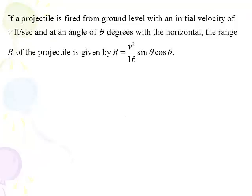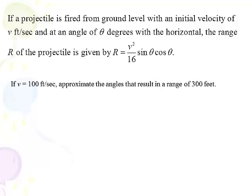Alright, let's do a straight problem here. If a projectile is fired from ground level with an initial velocity of v ft/sec and at an angle of θ degrees with the horizontal, the range R of the projectile is given by R = v² / 16 sin θ cos θ. We will always provide the formula for you.